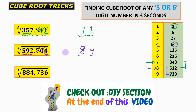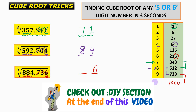For the next question, the unit place is 6, which corresponds to an original unit digit of 6, so we write 6. Discarding the last three digits leaves 884. Since 884 lies between 729 (9³) and 1000 (10³), we pick 9 as the tens digit, giving the cube root as 96.